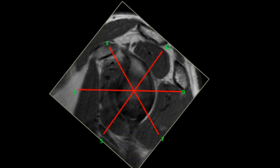Before we begin, a little bit of discussion about how we describe labral tears. Some people use the clock position where the anterior labrum is 3 o'clock, posterior as 9 o'clock, 12 o'clock is superior and 6 o'clock is the inferior labrum. The problem with this is, depending on the right or the left shoulder, these would get inverted. Some people follow that the anterior labrum is always called 3 o'clock no matter which shoulder it is.